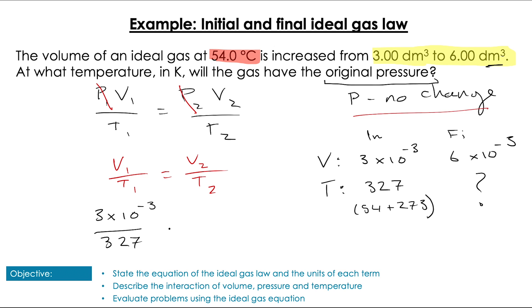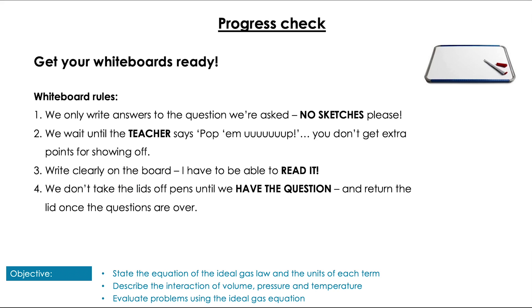So then I just take these values and I plug them into my equation over here. So I'm going to get 6 times 10 to the minus 3 over T2 and then I rearrange to find T2 as the subject of the equation which gives me 6 times 10 to the minus 3 multiplied by 327 divided by 3 times 10 to the power negative 3 which equals 654 Kelvin. Quick question on that then.